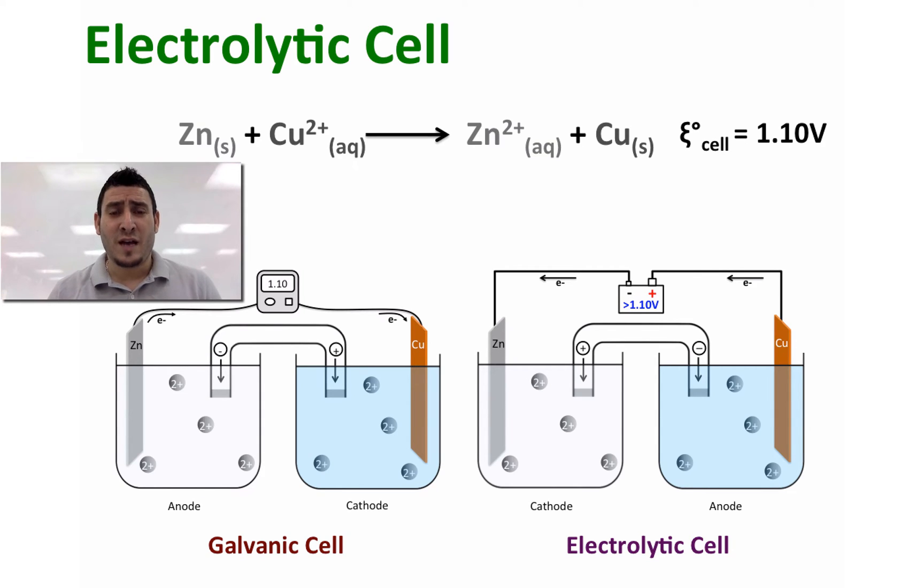Consider the following reaction between zinc and copper. The cell potential is 1.10 volts, which is positive. So this redox reaction will proceed spontaneously in the forward direction and therefore will form a galvanic cell.